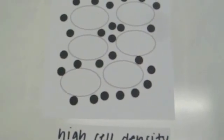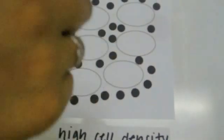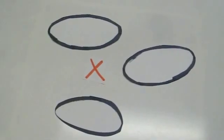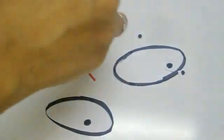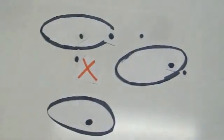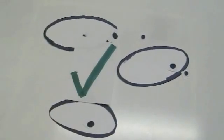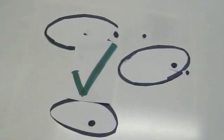As the bacteria detect the rise in population density via auto-inducers, they in turn secrete more auto-inducers proportionally. When the amount of auto-inducers in the immediate proximity reach a certain concentration, they pass a threshold and the cell's receptors become fully activated due to the saturation of the receptors.